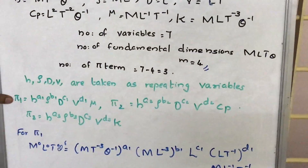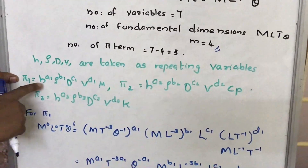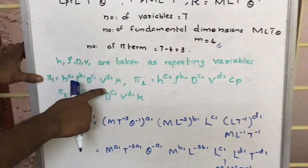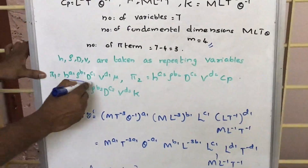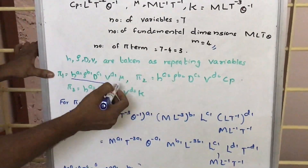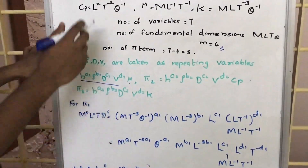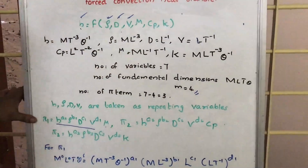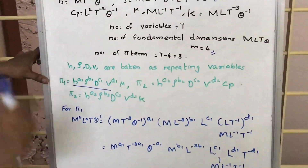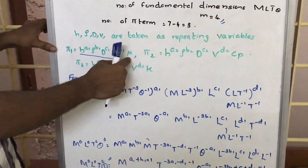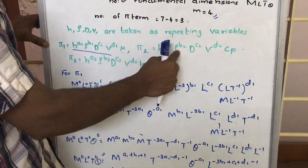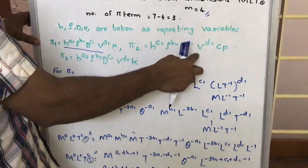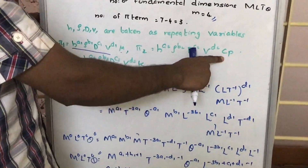For pi 1, it is equal to H raised to A1, rho raised to B1, D raised to C1, V raised to D1 — these 4 are the repeating variables. Mu can be found only in pi 1. For pi 2, again H, rho, D, V are the repeating variables: H raised to A2, rho raised to B2, D raised to C2, V raised to D2. Cp is not a repeating variable.